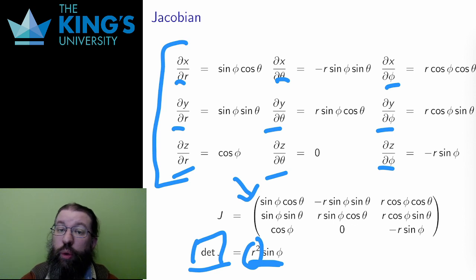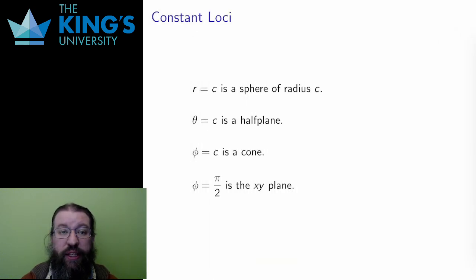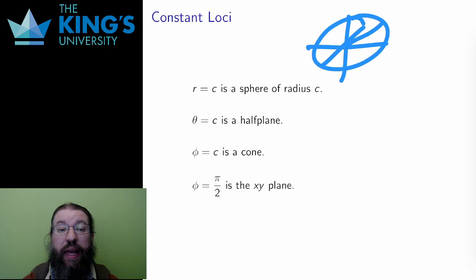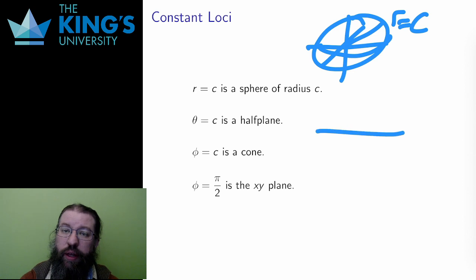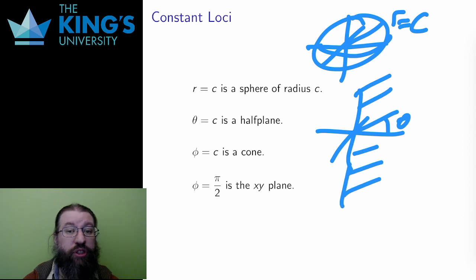Again, it is good to know what shapes result from the constants in each coordinate. When r equals c, I get a sphere that the whole system is based on. Fixed radius, but any of the two angles gives the whole sphere. When theta is fixed, this means the angle in the x, y plane is fixed, the longitude is fixed. But the sphere can be as large or small as I want, and I can be at any co-latitude, any angle down from the north pole. The result is, like with cylindrical coordinates, a half plane extending out from the z-axis.